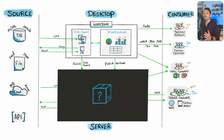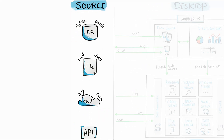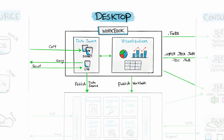Now let's do a quick summary of the whole Tableau architecture. The source layer is outside Tableau and contains your data — it could be databases or files. In the desktop layer, developers connect Tableau Desktop to data sources either by copying the data inside Tableau using an extract connection or by using live connections to the sources. Then developers build visualizations using worksheets, dashboards, and stories.